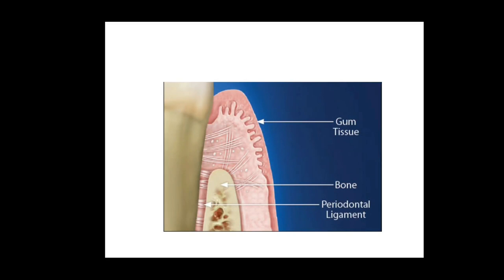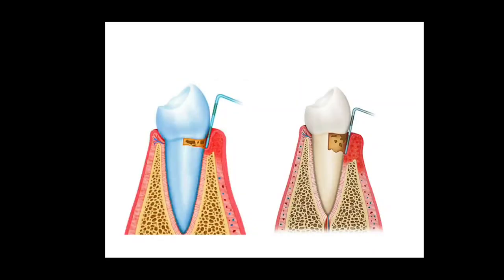We will have a quick recap on periodontium. It includes the investing gingiva and supporting alveolar bone, periodontal ligament, and cementum.